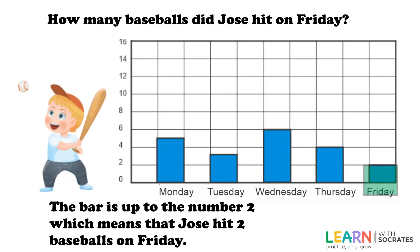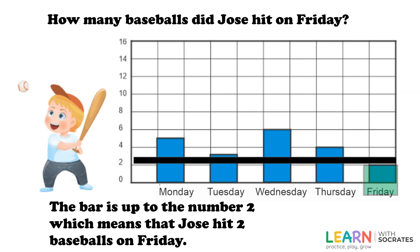How many baseballs did Jose hit on Friday? The bar is up to the number two, which means that Jose hit two baseballs on Friday.